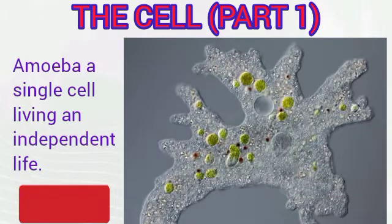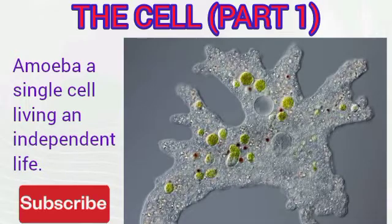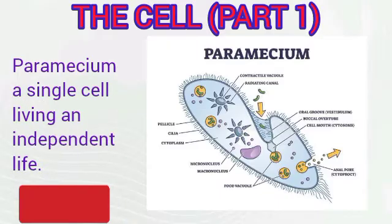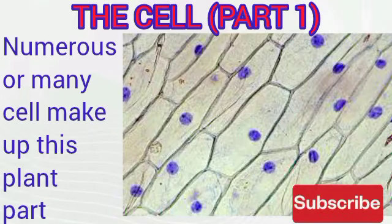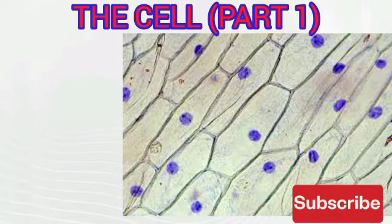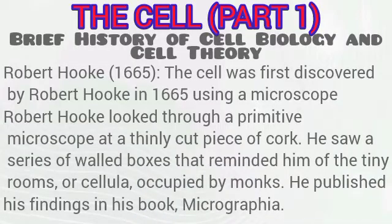As you can see in the diagram displayed, you can see an amoeba — a single cell, independent and possessing all the characteristics of life. Likewise, you can also see the paramecium. Cell can also be part of a multicellular organism, as you can see in this onion cell, with numerous cells being part of this plant.